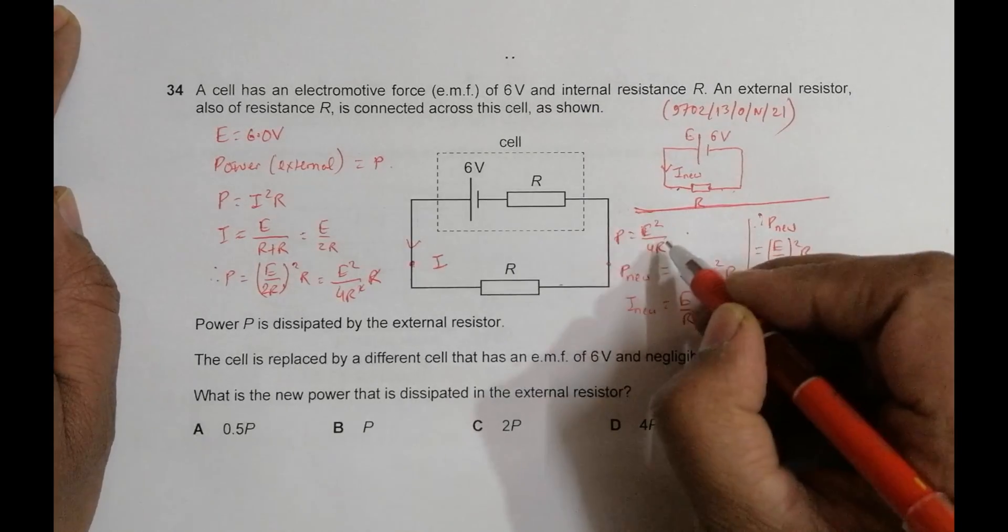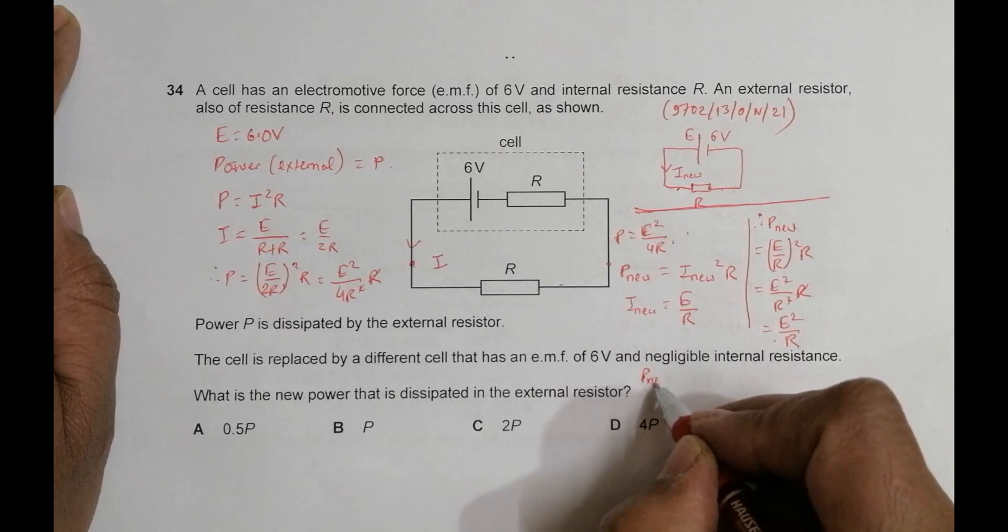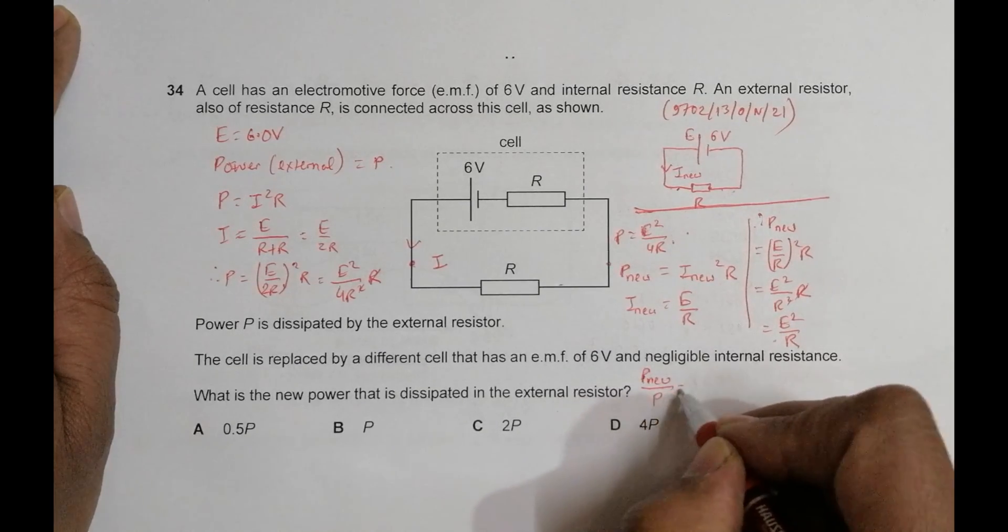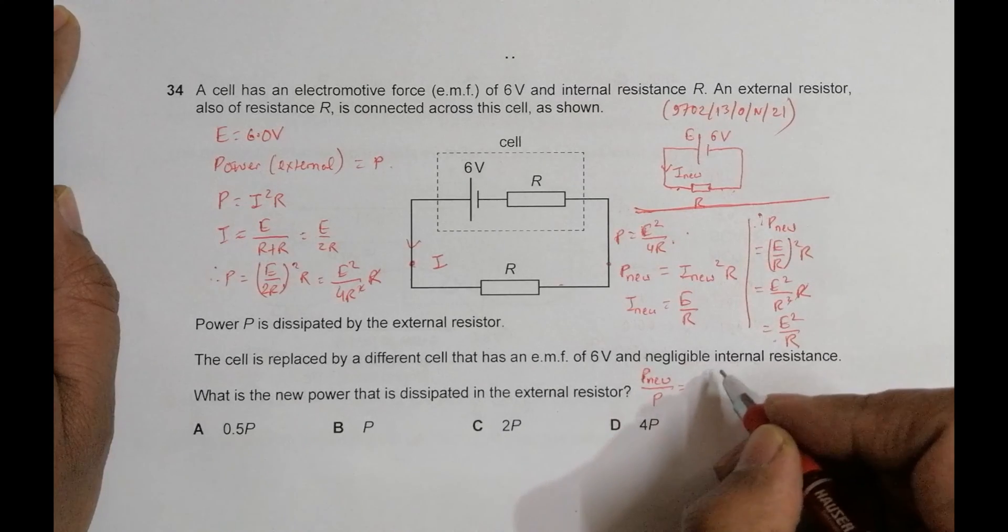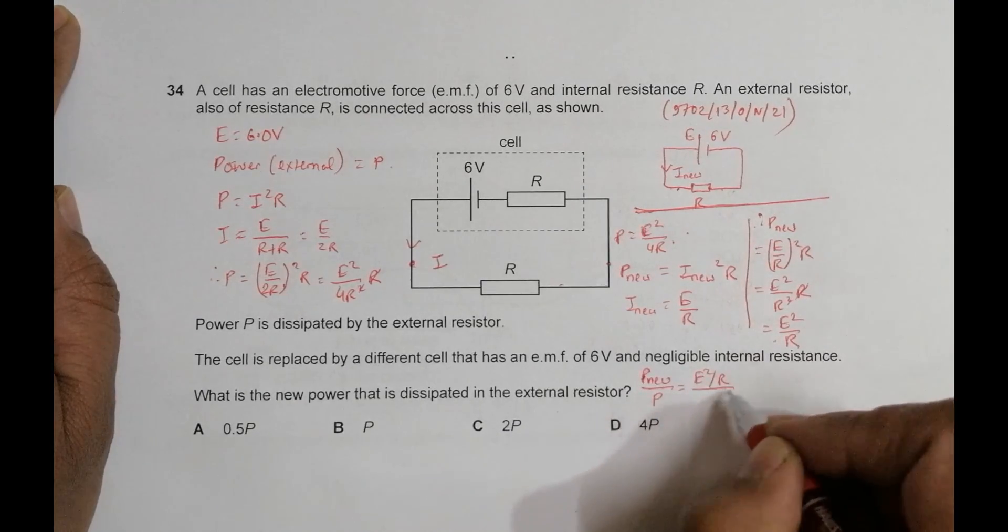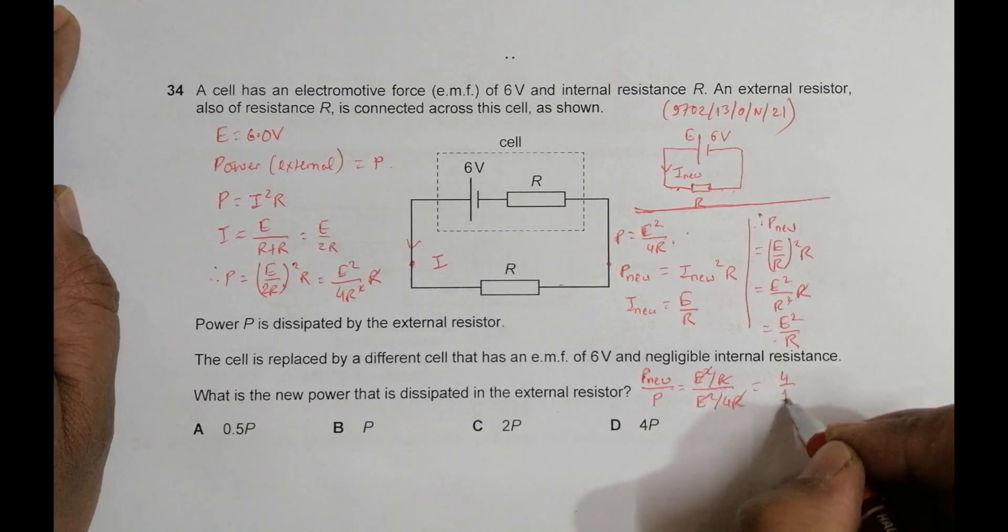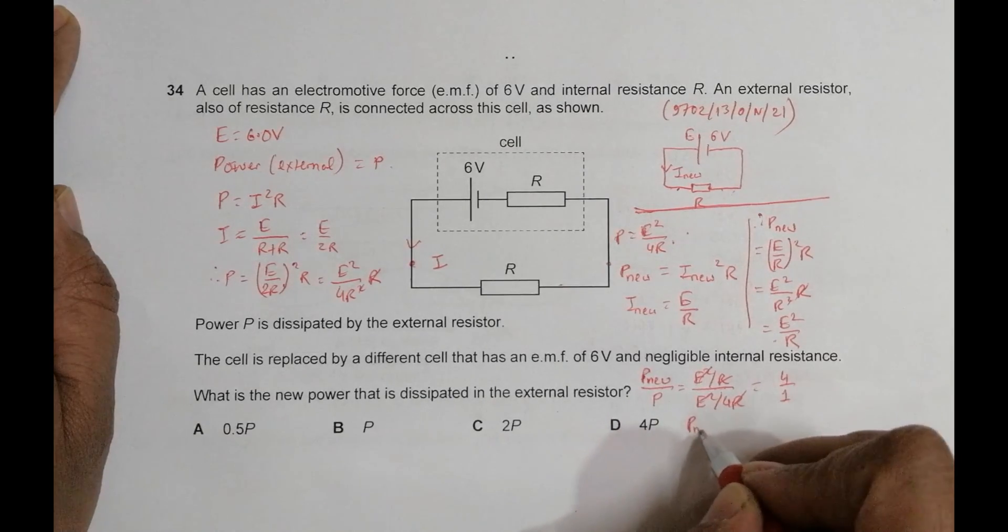So P_new/P_old = (E²/R)/(E²/4R) = 4. Therefore, P_new = 4P.